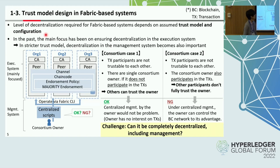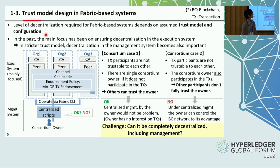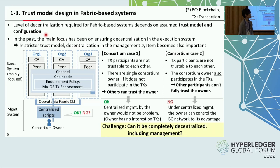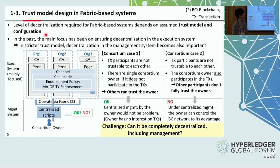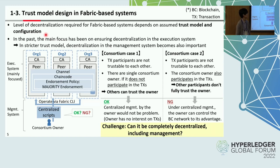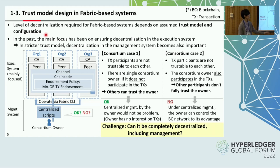Consider the first case of a consortium where transaction participants are not trustworthy of each other. The consortium has a single consortium owner which operates the consortium. In this case, if the owner does not participate in the transaction, other participants can trust the owner because the owner has no interest in transactions. So centralized management by the owner would not be a problem, because the owner has no interest in transactions.